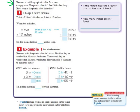It says Herman is building a picnic table for a new campground. The picnic table is 5 feet 10 inches long. How long is the table in inches? So what we need to do is, we already know it's 5 feet 10 inches. This 10 inches part is already in inches. So we're just going to change the 5 feet to inches, and then add whatever that is to the 10 inches that I already know.